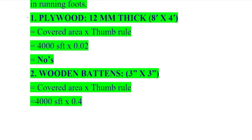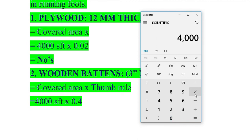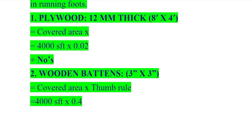First we have plywood. In most cases, plywood thickness is 12 mm and the size is 8 feet by 4 feet — this size is mostly used. To calculate the number of plywood sheets using the thumb rule, we use: 0.02 multiplied by the covered area of the slab. Our covered area is 4000 square feet. So: 4000 × 0.02 = 80. We require 80 numbers of plywood.